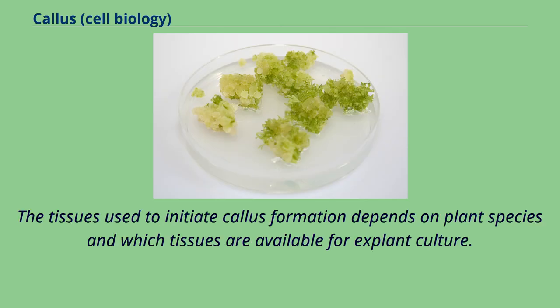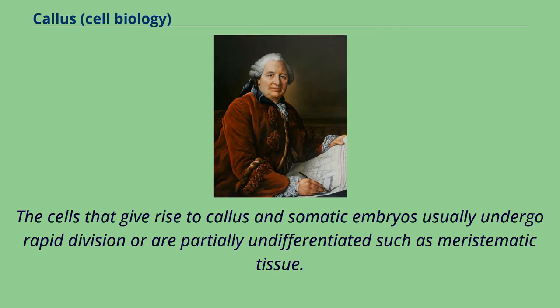The tissues used to initiate callus formation depend on plant species and which tissues are available for explant culture. The cells that give rise to callus and somatic embryos usually undergo rapid division or are partially undifferentiated, such as meristematic tissue.